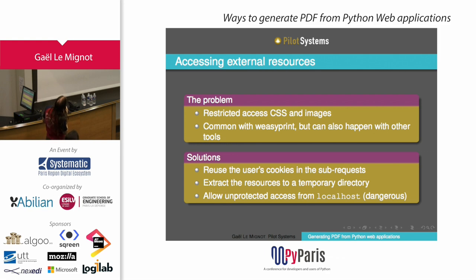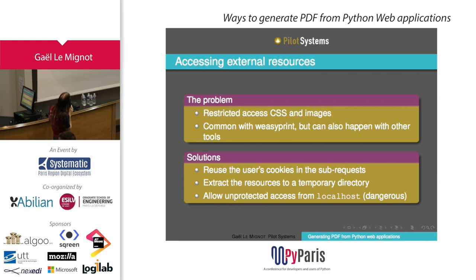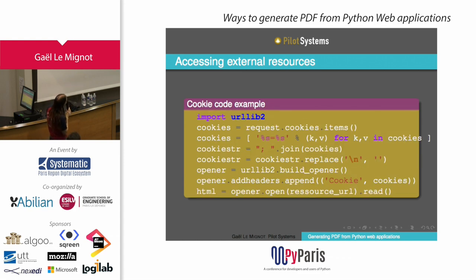Another problem, mostly with Wiziprint but also possible with images in other solutions, is that your rendering process may not have access to all the data because it may not be running with the user's authorization. You may need to extract the user's cookies and provide them to Wiziprint or whatever tool you're using, so it can fetch CSS, images, or other resources with the credentials of the user who requested the PDF. This involves a bit of hacking — getting the user's cookies, adjusting them, and passing them to the urllib2 opener used by Wiziprint to fetch resources.